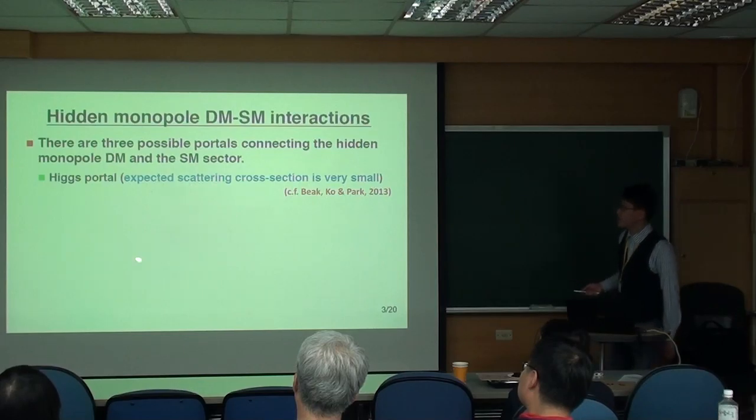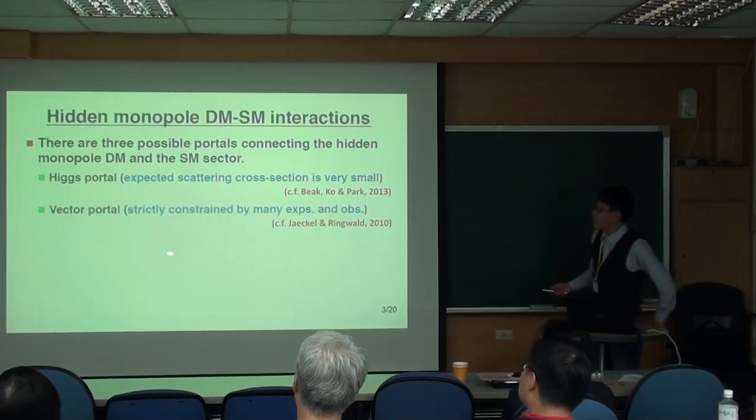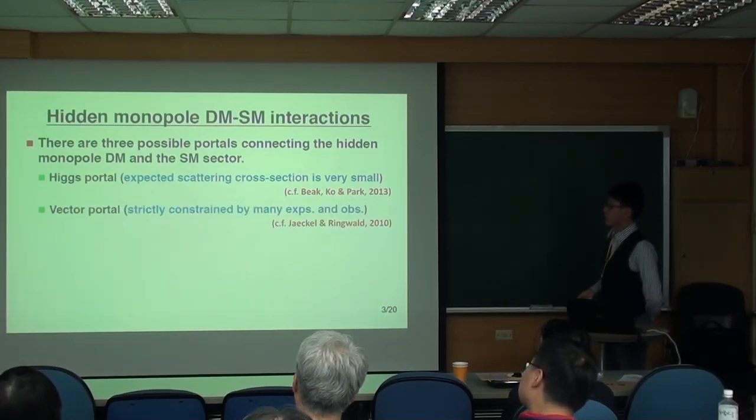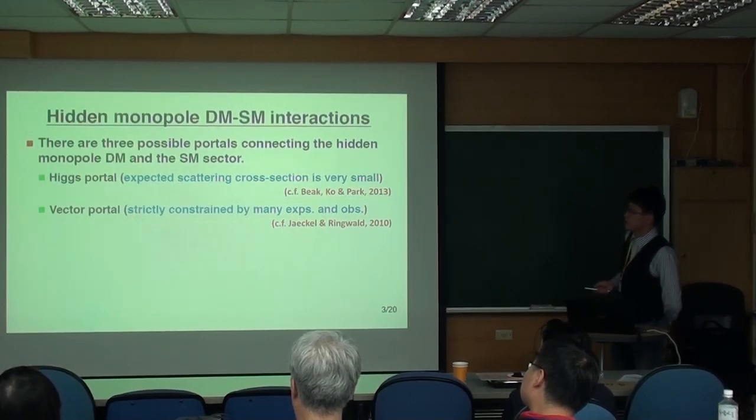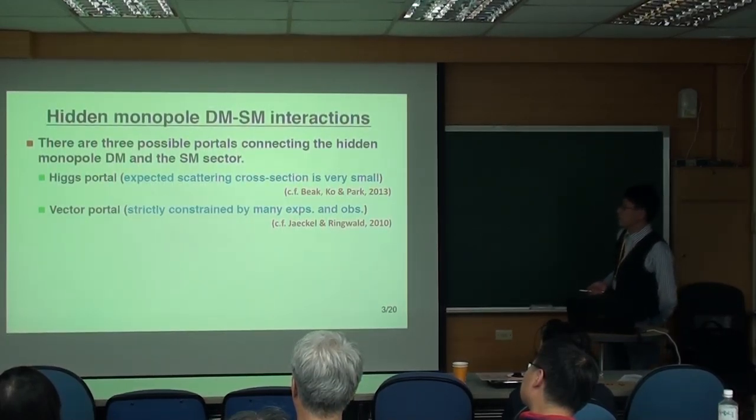The first one is the so-called Higgs portal. However, in this case, the expected scattering cross section is too small. And this was analyzed by others. The second way is the so-called kinetic mixing. However, in this case, there are constraints from many observations and experiments.